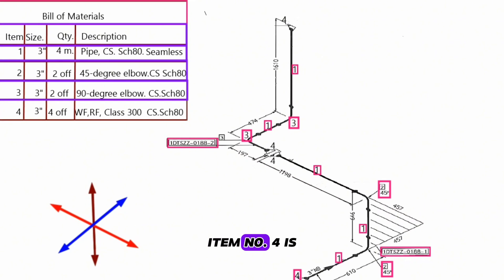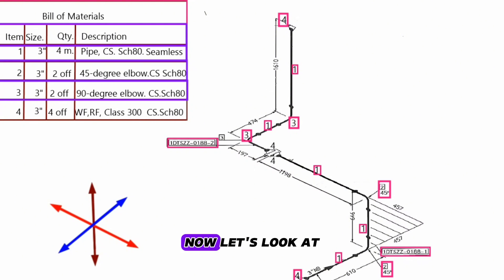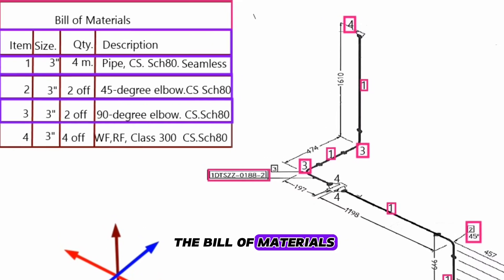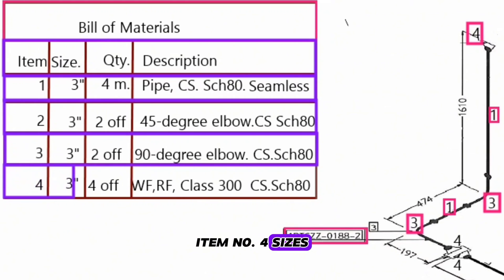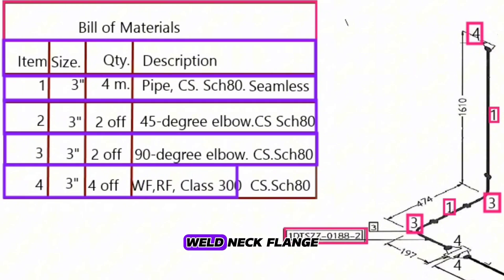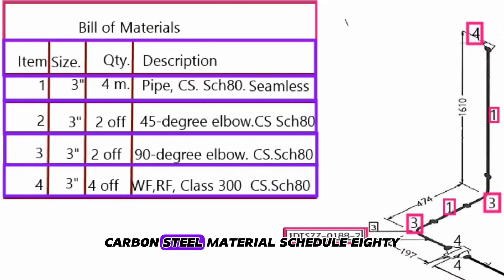Item number 4 is shown in four places on the pipe drawings. Let's look at the bill of materials. Item number 4, size is 3 inch, the quantity is four pieces — weld neck flange, raised face, class 300, carbon steel material, schedule 80.